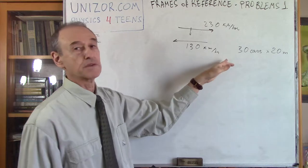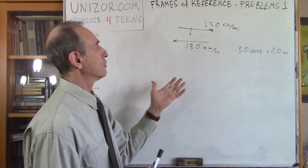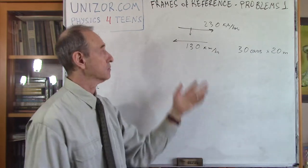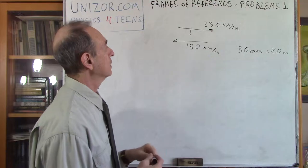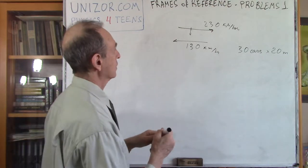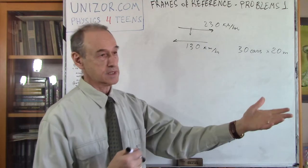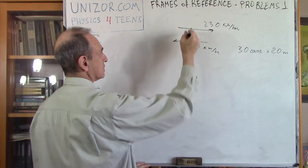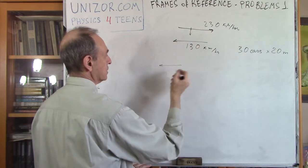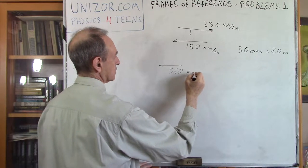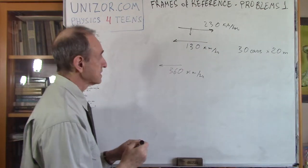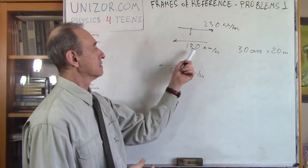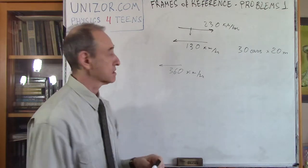We know the speed of each train relative to the ground. Whenever we talk about the passenger looking at the other train, we are talking about a different reference frame — the reference frame related to this passenger. Considering these are opposite directions, one train goes in the positive direction and another in the negative, so the relative velocity of that train relative to the passenger would be the sum: 360 kilometers per hour. The passenger sees himself as the origin of his own frame of reference, with the train passing by at 360 kilometers per hour.